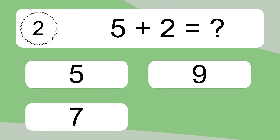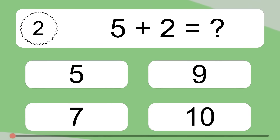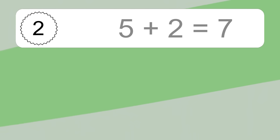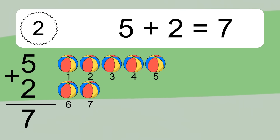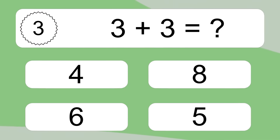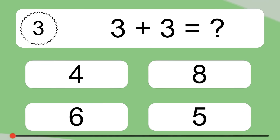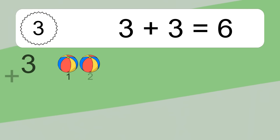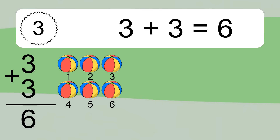5 plus 2 equals what? 5 plus 2 equals 7. Let's count it. 1, 2, 3, 4, 5, 6, 7. 3 plus 3 equals what? 3 plus 3 equals 6. Let's count it. 1, 2, 3, 4, 5, 6.